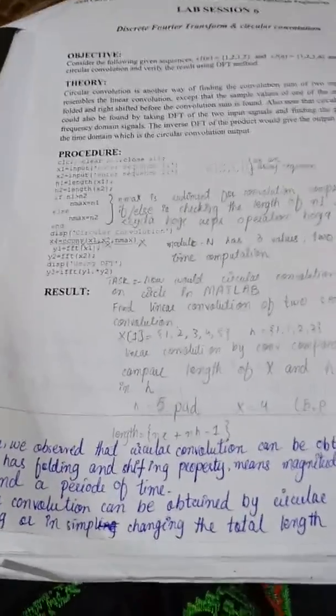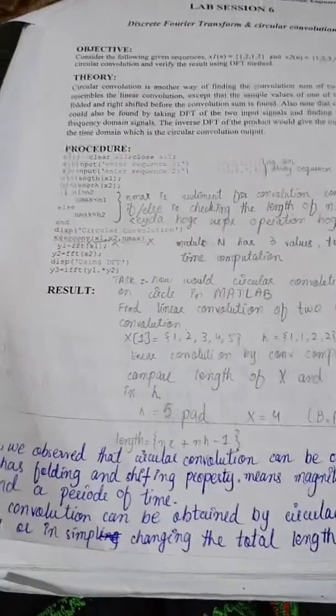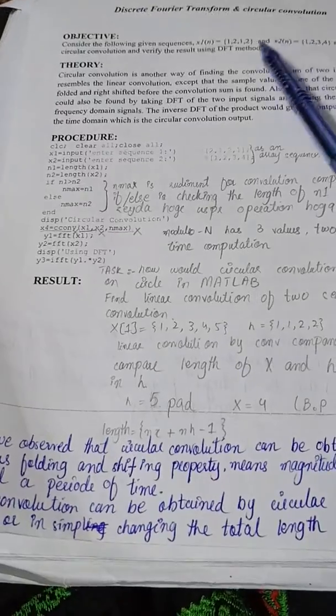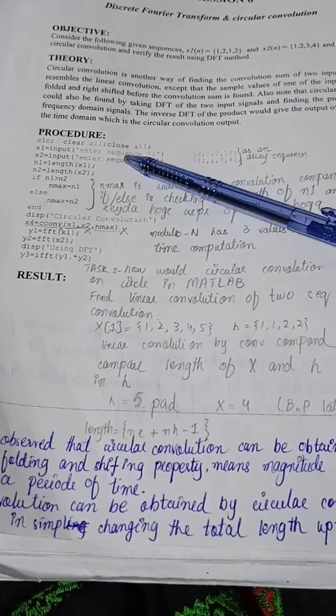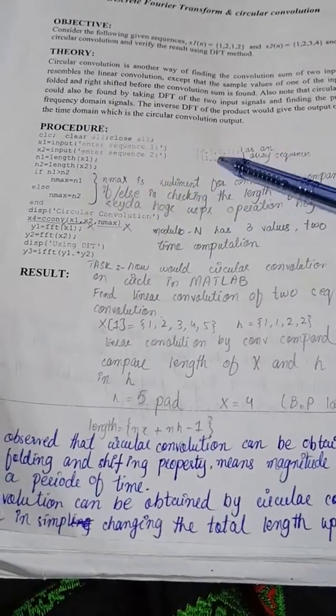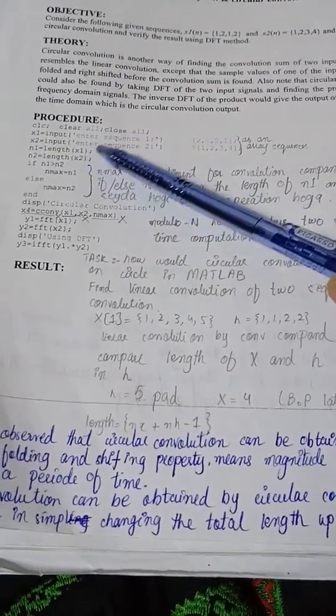First of all let me explain circular convolution directly with the help of commands. In circular convolution the length of both signals must be equal. So here we have defined two signals. The length is same, and n1 is the length of x1 and n2 is the length of x2.